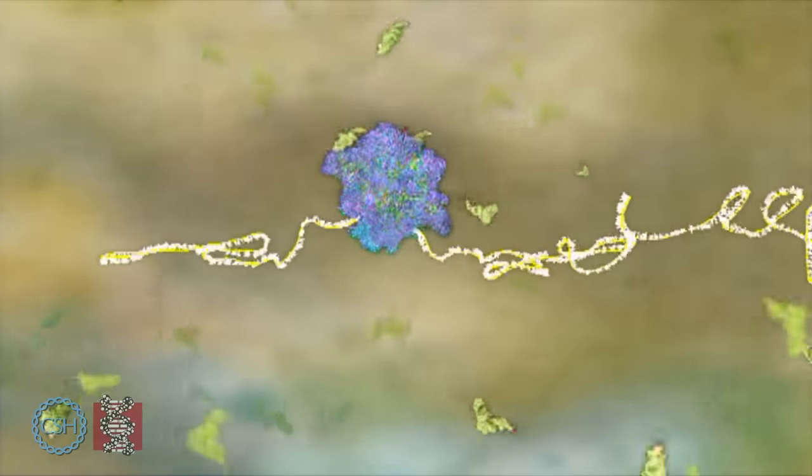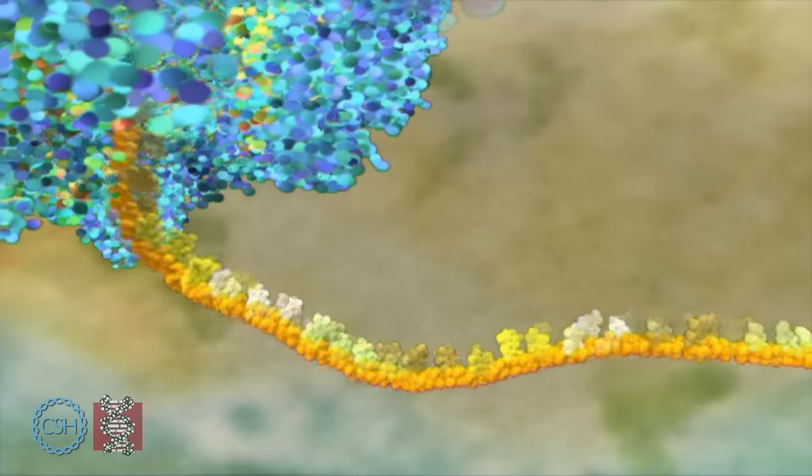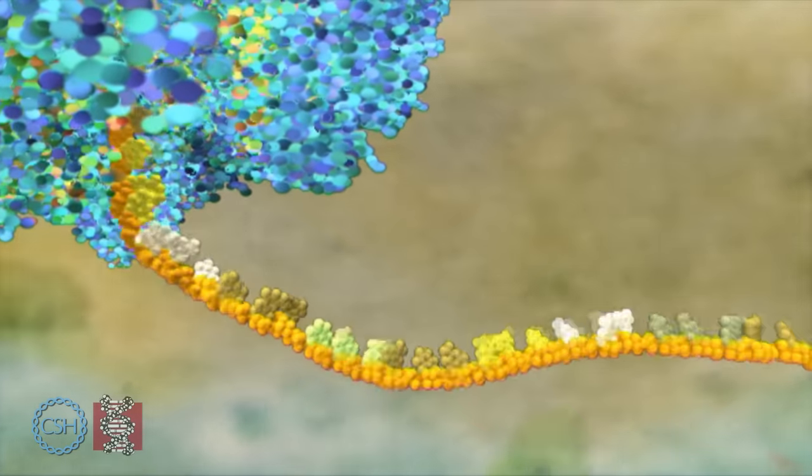Special transfer molecules, the green triangles, bring each amino acid to the ribosome. Inside the ribosome, the RNA is pulled through like a tape.